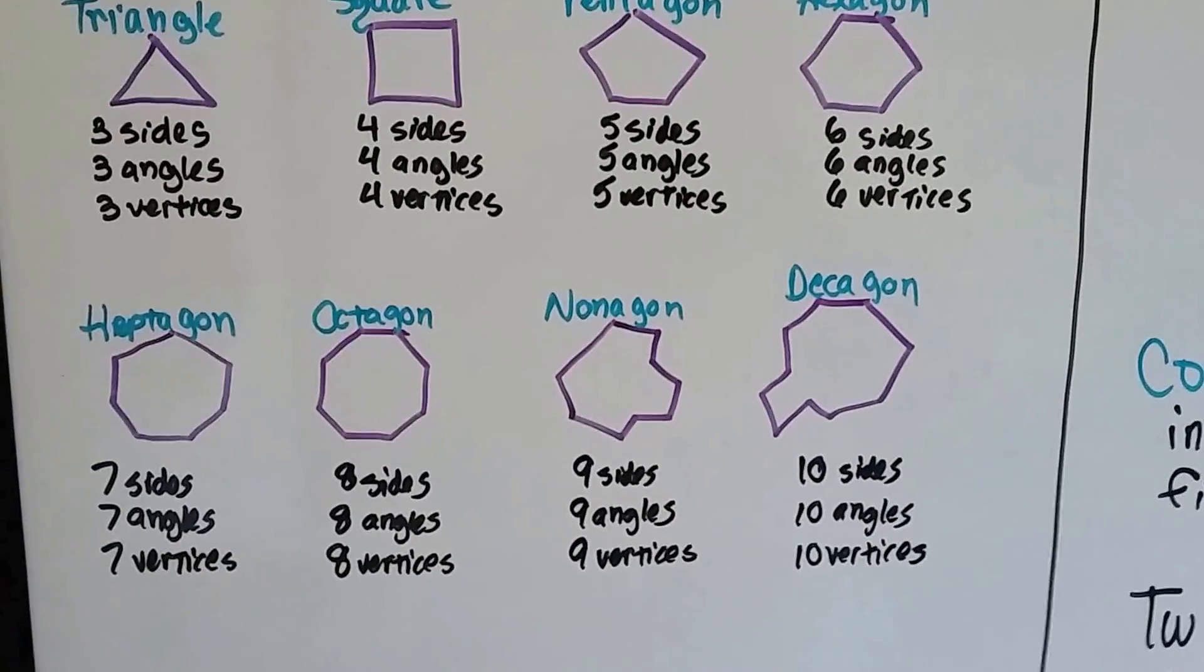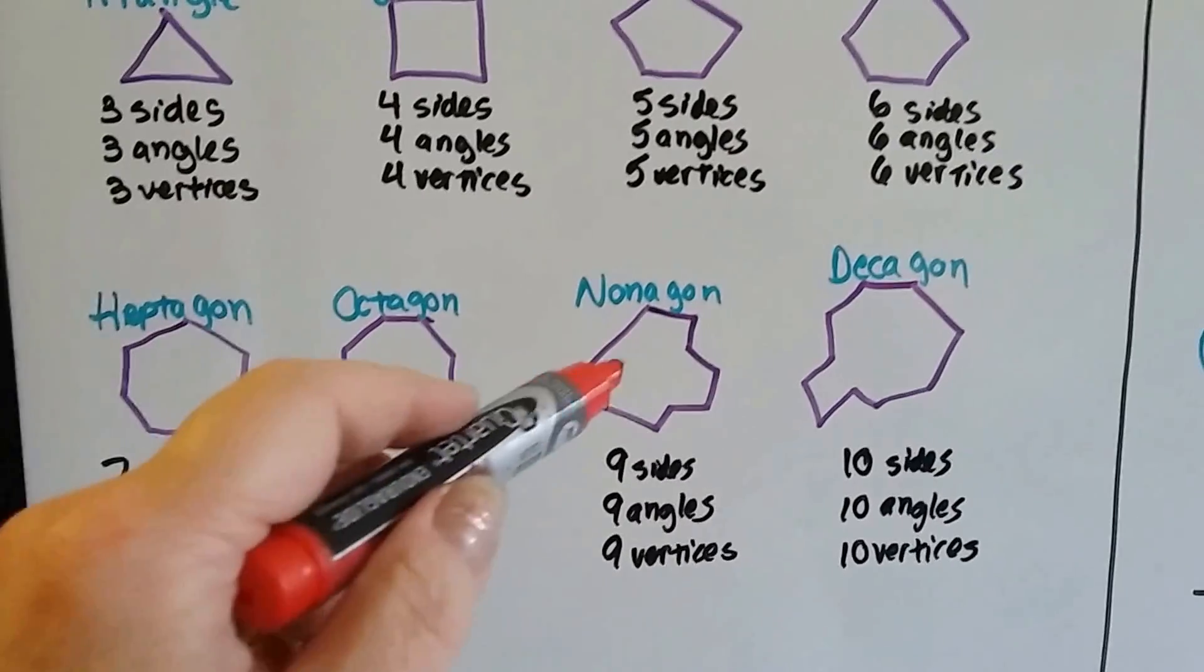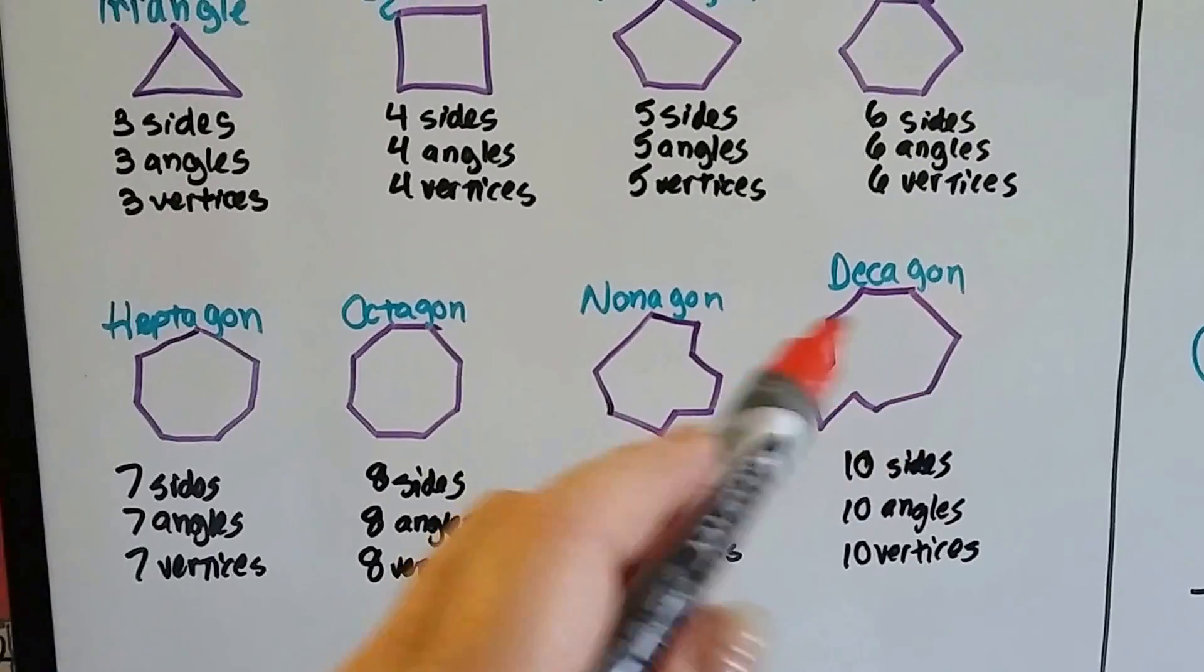Heptagon, that's 7. Octagon, that's 8. Nonagon, that means there's 9 sides, 9 angles, 9 vertices. And a decagon has 10 of each.